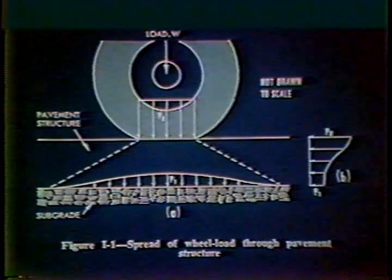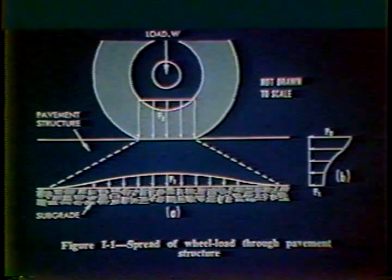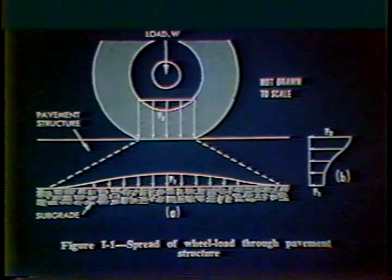Another form of pavement failure is rutting due to loading in the wheel paths. This can be caused by too much stress on the underlying soil. Heavier wheel loads are transmitted through the pavement to the soil below. The thicker the pavement, the less load on the soil. Therefore, weaker soils need a thicker or stronger pavement. The stress on the soils underlying a pavement can also be reduced by reducing the wheel load.